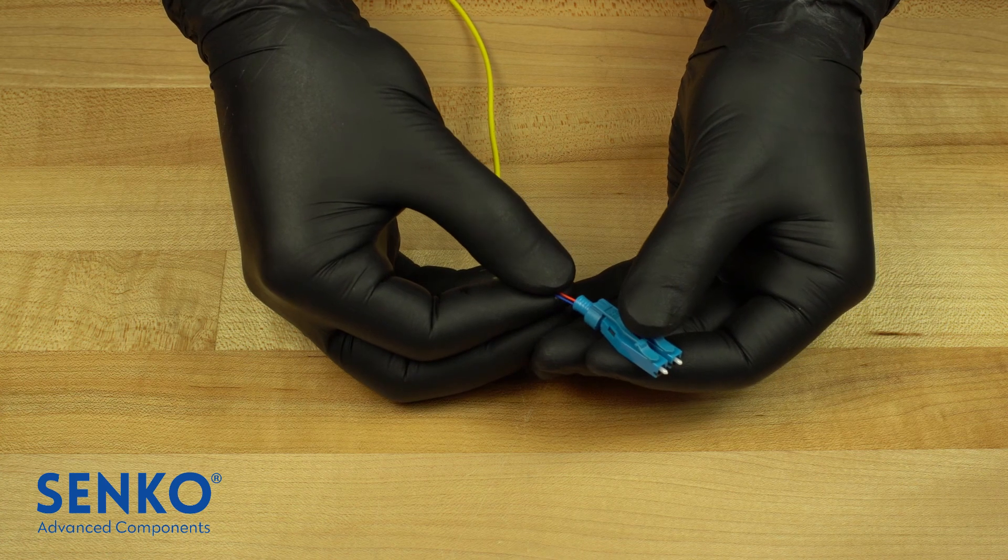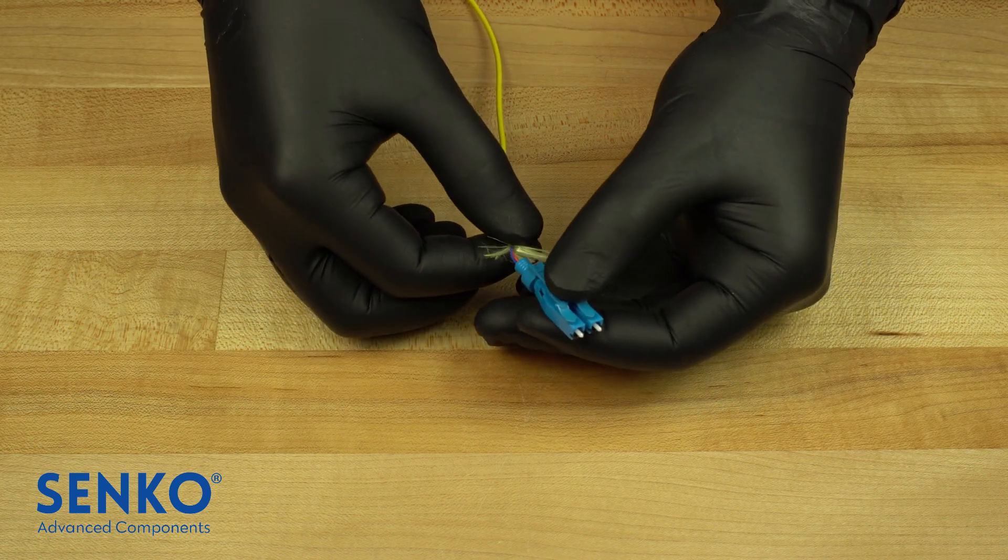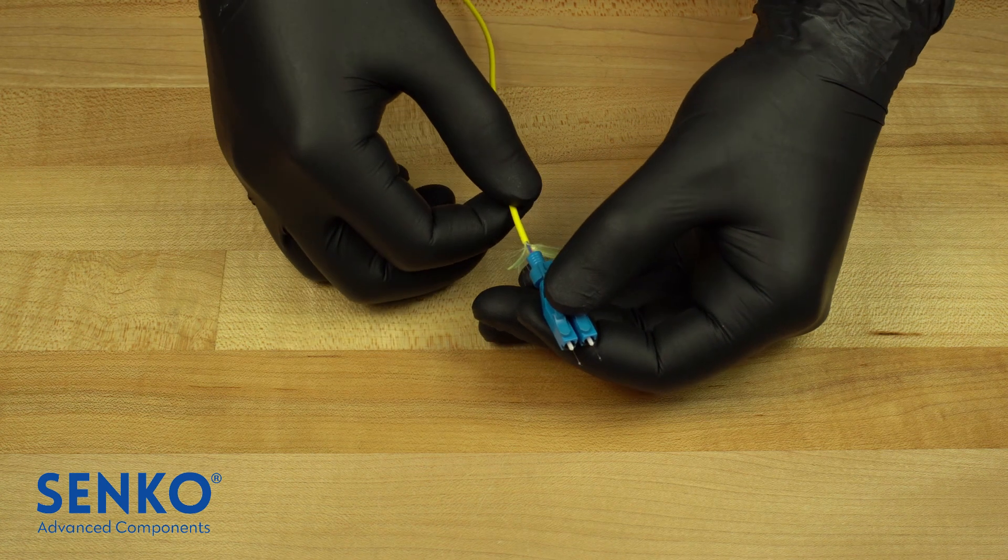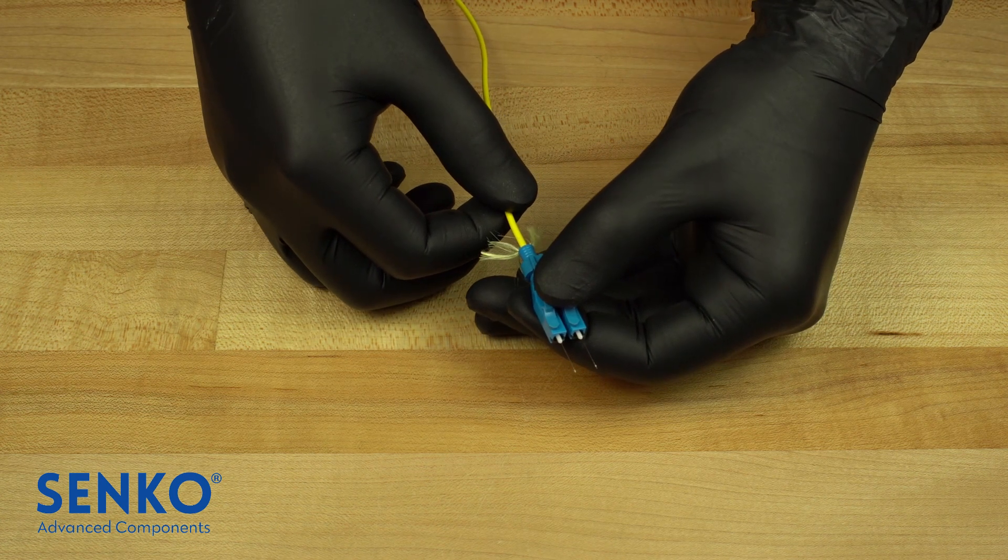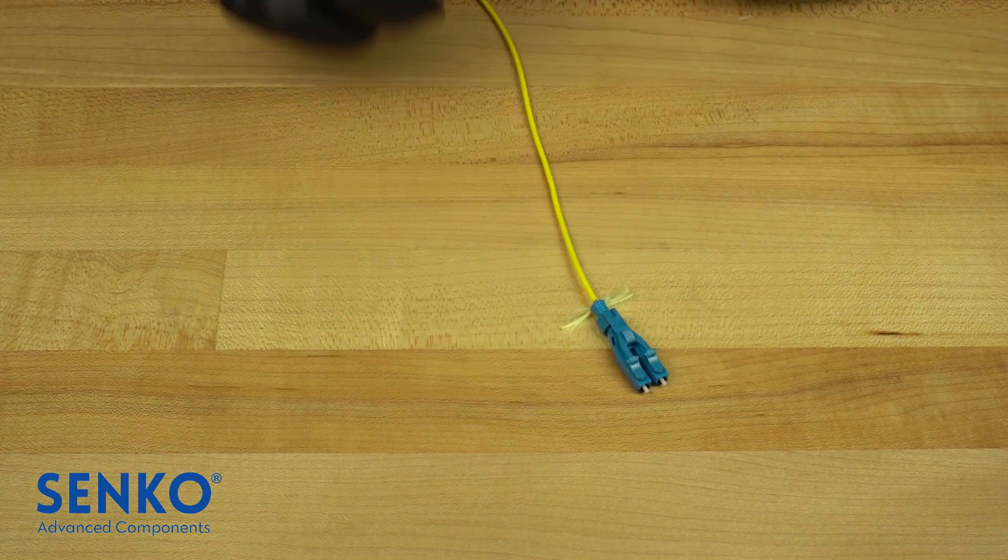There may be some resistance while trying to insert the fibers into the connector. If you experience this, then you should gently persuade the fibers back and forth until they protrude through the ferrules. Continue inserting the fibers until you feel them stop.